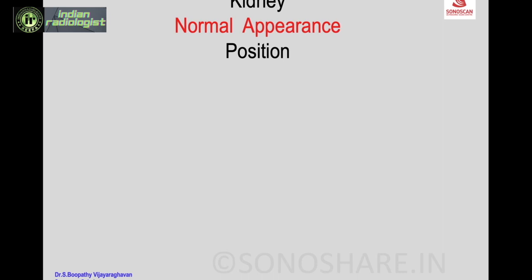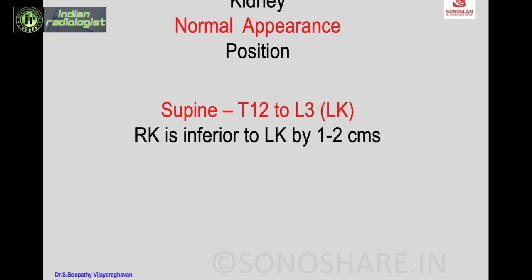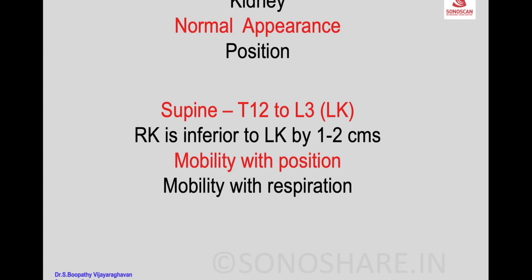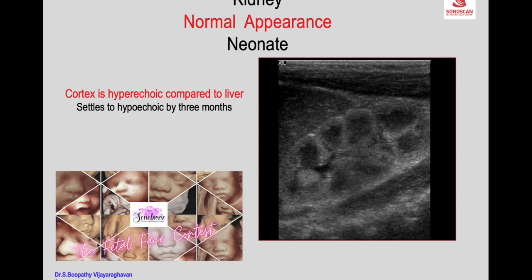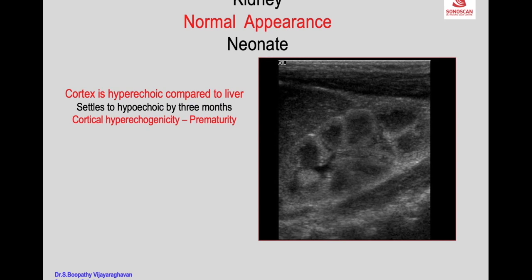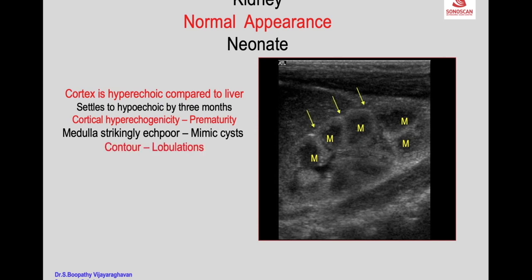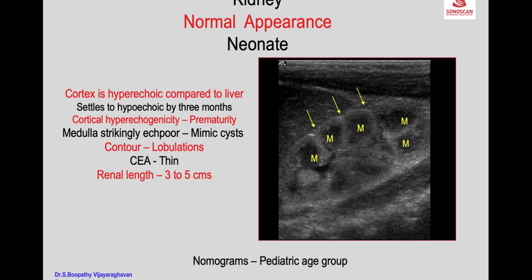The position of the kidney in supine extends from T12 to L3. The right kidney is slightly inferior to the left by about one to two centimeters. There is slight mobility with change in position and with respiration. The normal appearance of the kidney is different in the neonate: the cortex is hyperechoic compared to the liver, becoming isoechoic by about three months. In premature infants the echogenicity is more pronounced, the medulla is strikingly echo-poor, there are contour lobulations, the central echogenic area is thin due to very little fat, and the renal length ranges from 3 to 5 centimeters.